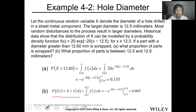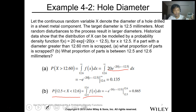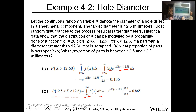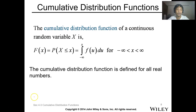For Letter B, the probability of X between 12.5 and 12.6 is the integration of f(x) dx from 12.5 to 12.6. Type the integral of 20 * e raised to negative 20(x − 12.5) from 12.5 to 12.6 in your calculator. When you integrate, the answer should be 0.865. That is the answer for part (b) — the proportion of parts with diameter between 12.5 and 12.6 millimeters.